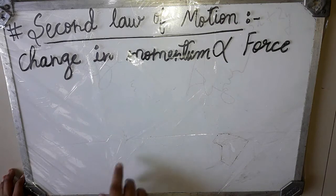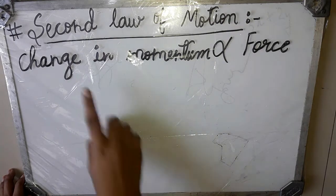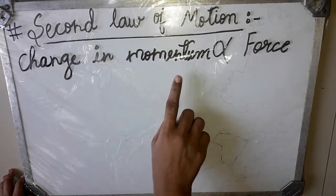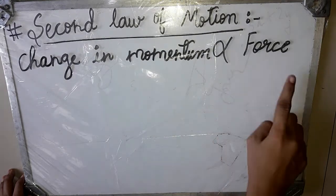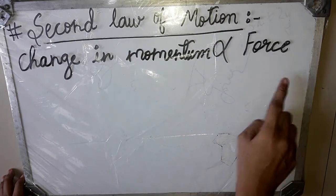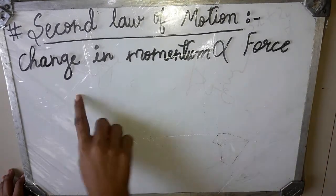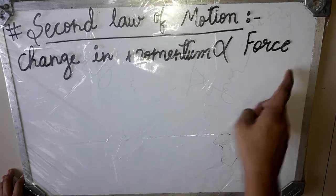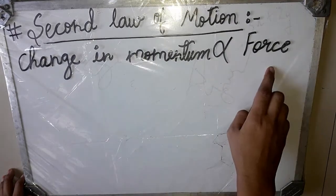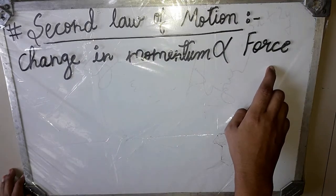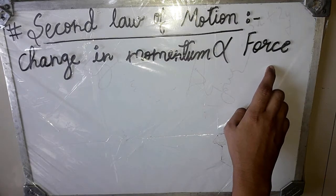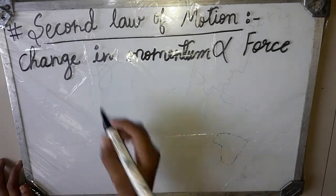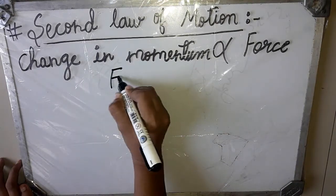We start with the Second Law of Motion. What is the statement? Change in momentum per unit time is directly proportional to force. Momentum change will be directly proportional to force. What type of force? Unbalanced force. The mathematical expression or formulation will be as follows.